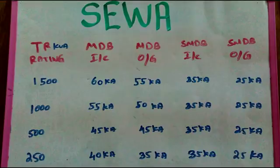As for the charge rate, the charge rate is the same. The income is in the rating of the MCB or the ACB, and in the rating of the MCB and SMDB.